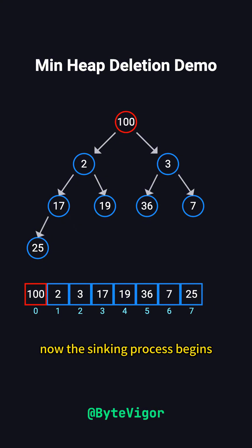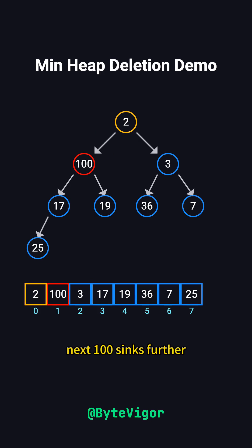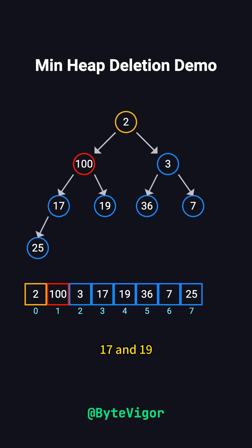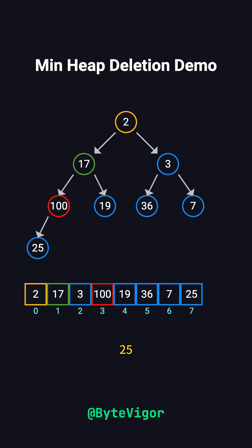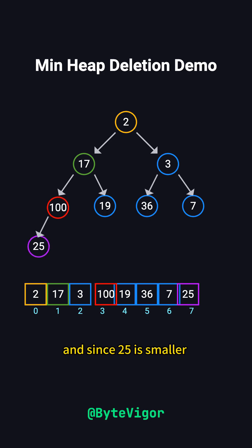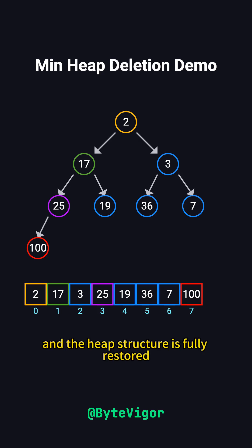Now the sinking process begins. Compare 100 with its two children, 2 and 3. Since 2 is smaller, we swap 100 and 2. Next, 100 sinks further and is compared with its new children, 17 and 19. Since 17 is smaller, we swap them. Finally, 100 is compared with its last child, 25, and since 25 is smaller, we swap again. At this point, 100 reaches a leaf node, and the heap's structure is fully restored.